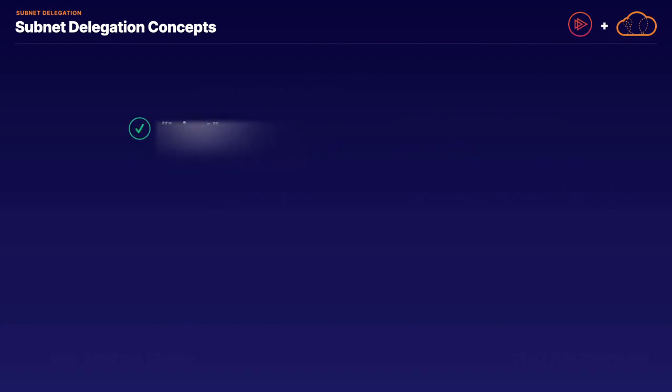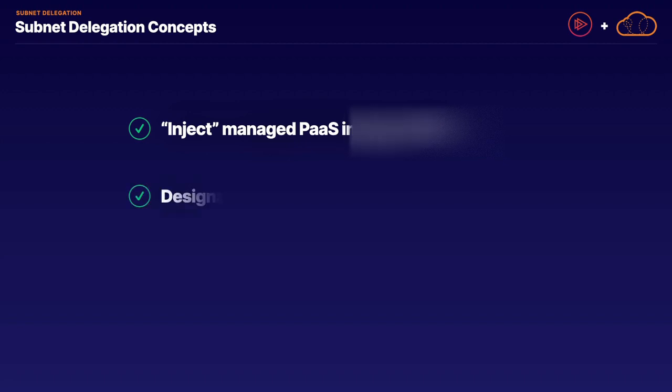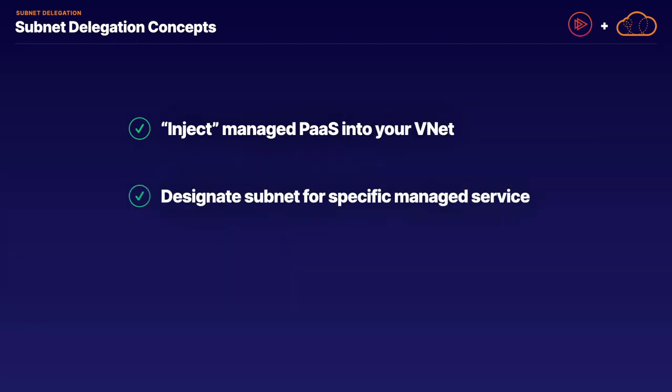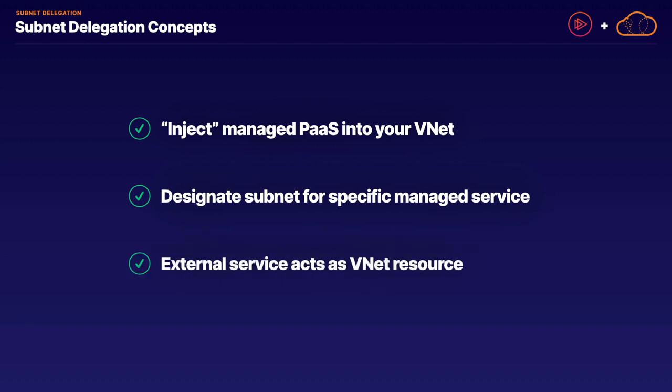From a high level, what subnet delegation is, at least according to Microsoft's documentation, is the ability to inject a managed service — specifically a platform-as-a-service service — directly into your virtual network. This means that you can designate or delegate a subnet to be a home for an external managed service inside of your virtual network. That external service will act as a virtual network resource, even though technically it is an external platform-as-a-service service.